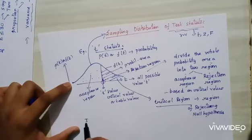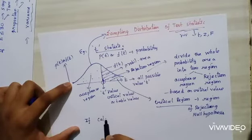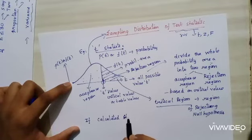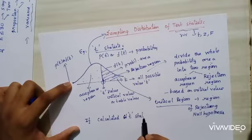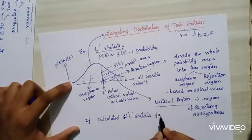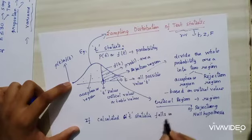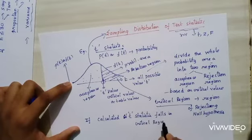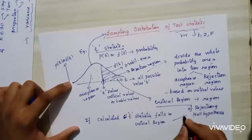If the calculated T-statistic value falls in the critical region, then we will reject the null hypothesis.